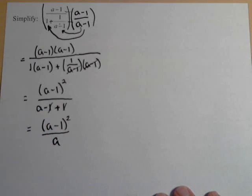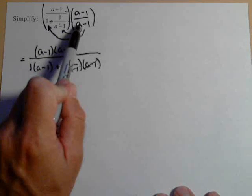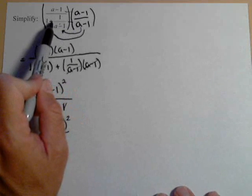So the first step is the most crucial, which is to multiply by the least common denominator on top and bottom. And then the other thing to remember is you must distribute over any addition or subtraction.